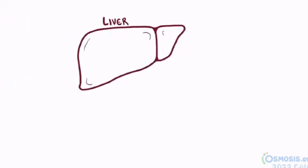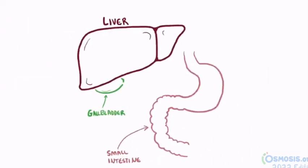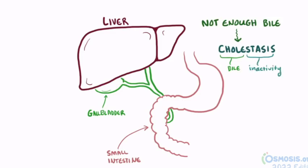For humans, bile usually flows from the liver and into the small intestine, and this is a super important part of digestion and absorption of nutrients. When there isn't enough bile flowing between these two, we can say that there's some sort of cholestasis going on, because 'chol' means bile and 'stasis' means inactivity.